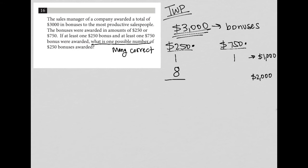So I know when I add these together, that if I gave out nine $250 checks or bonuses, and one $750 bonus, I will have given out—if I'm the sales manager—I will have given out $3,000 total dollars, which means I've accomplished exactly what the question asked me to find. So nine is a good answer.